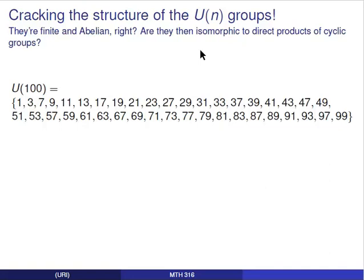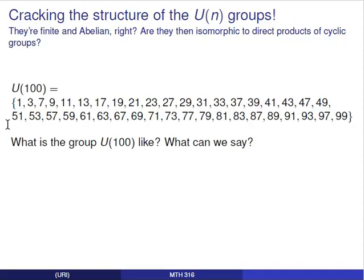U(n) was defined as the set of all integers that were positive and less than n, but that were relatively prime to n. For U(100), we get these 40 numbers — none of them has a factor greater than 1 in common with 100. Can we say anything about this group? Listing the elements doesn't necessarily tell us anything about the structure of the group or what the Cayley table might look like.